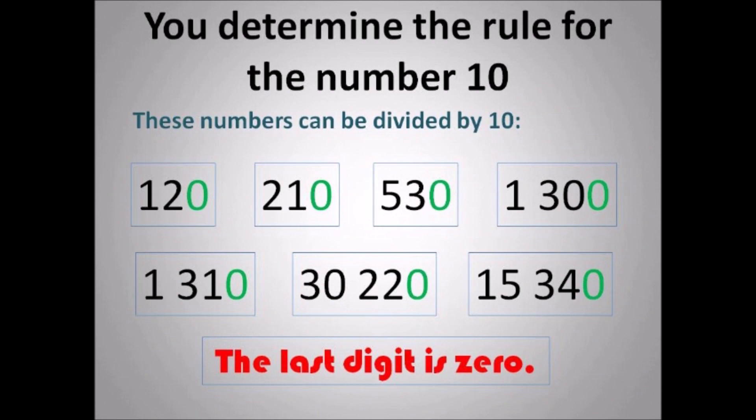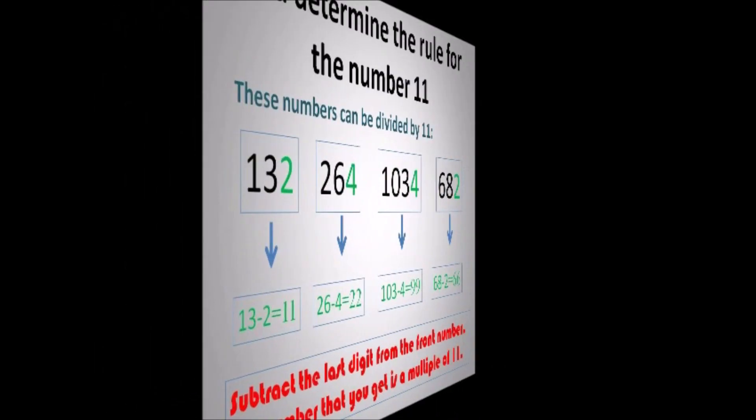For 10 — too easy. The last digit has to be 0. The last digit must be 0 if the number is divisible by 10. And that one is straightforward. Too simple for the number 10.